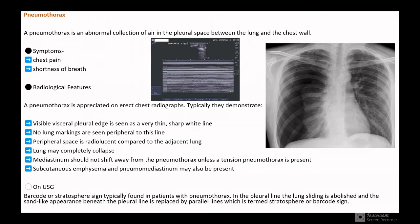First is pneumothorax. What is pneumothorax? It is abnormal collection of air in the pleural space between the lungs and the chest wall. You can see the radiological images, that is the x-ray. Symptoms can be chest pain and shortness of breath.